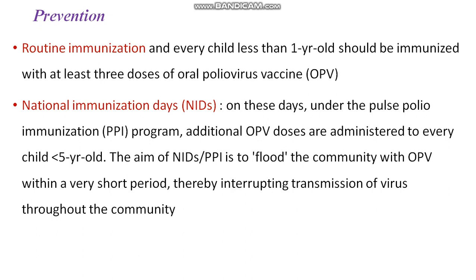Oral polio vaccination under the national immunization schedule should be given at birth, one and a half months, two and a half months, three and a half months, and later as booster doses along with DPT boosters. During the initial one year, children should receive at least three doses of oral polio vaccine.